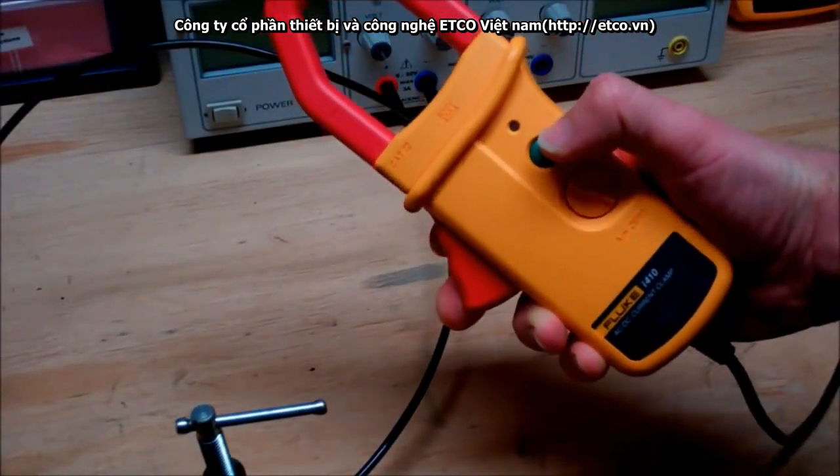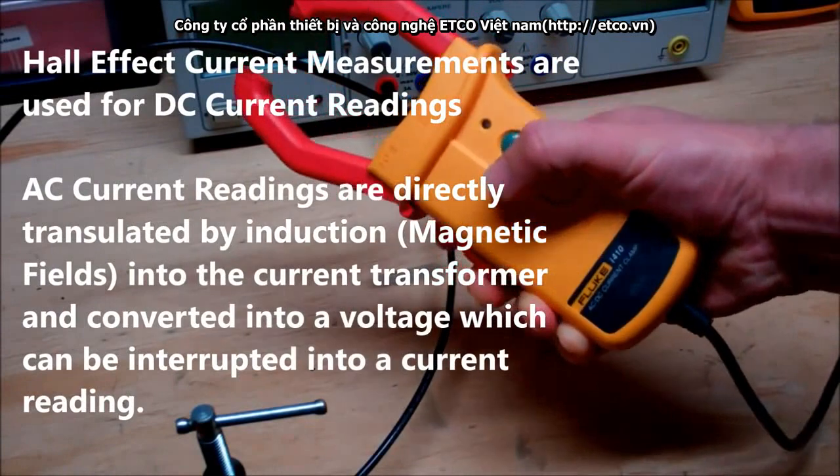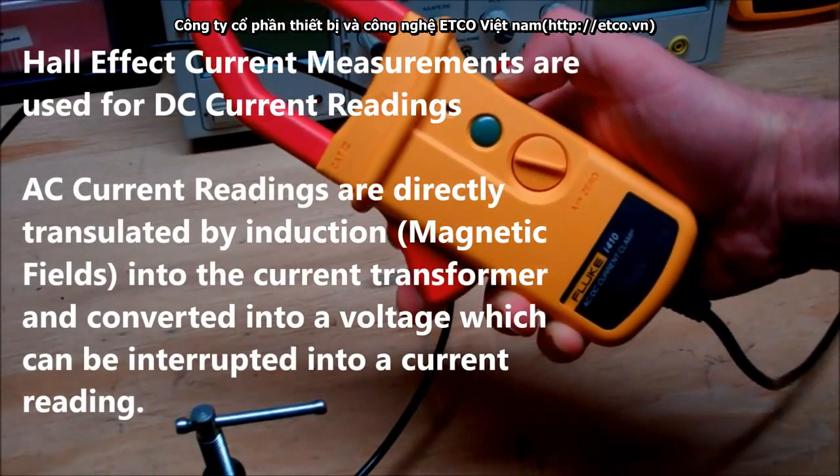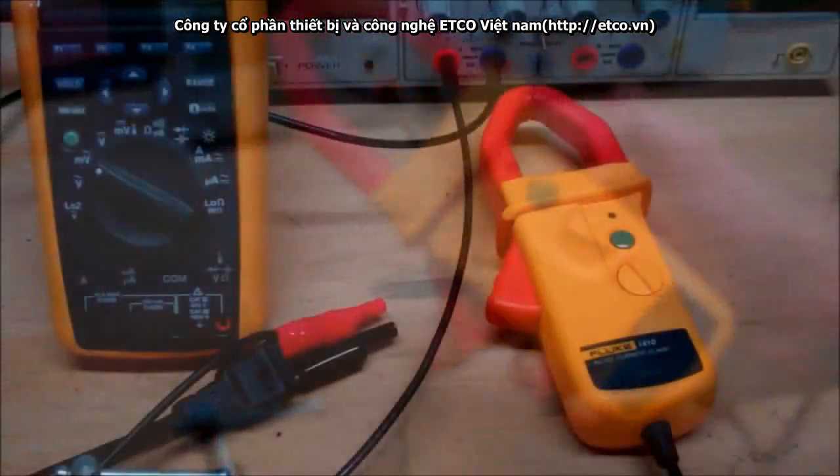Now in general there's two types of current meters. There's ones that are just able to measure AC, and there's others that are able to measure DC using the Hall effect. Now I'm not going to go into the details of how they work, I'm just going to focus on their operational function.